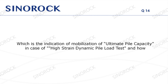Question 14: What is the indication of mobilization of ultimate pile capacity in the case of a high-strain dynamic pile load test, and how? When the pile shaft produces large displacement during the test, or when the pile head is hammered with different drop distances and the maximum force measured twice is almost unchanged, we can see that the side resistance and end resistance of the pile have all been excited. The result calculated by applying the data at this time is the ultimate pile capacity.